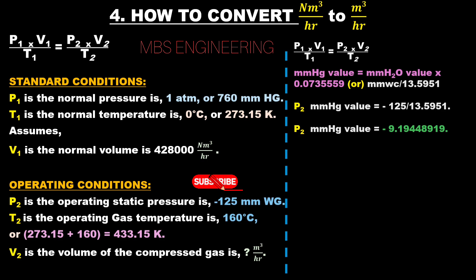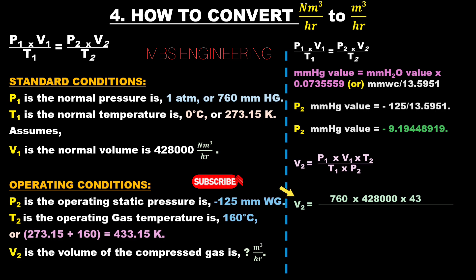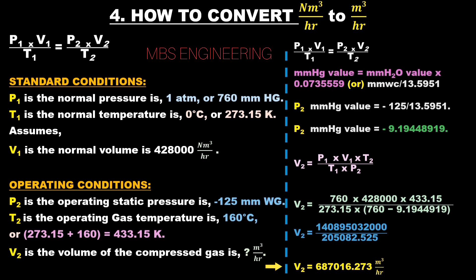The ideal gas law rearranged to calculate V2 gives: V2 = P1 × V1 × T2 / (T1 × P2). Applying the standard and operating condition data: V2 = (760 × 4,28,000 × 433.15) / (273.15 × (760 − 9.1944919)). Following the step-by-step calculation, V2 equals 687,016.273 m³/hr.